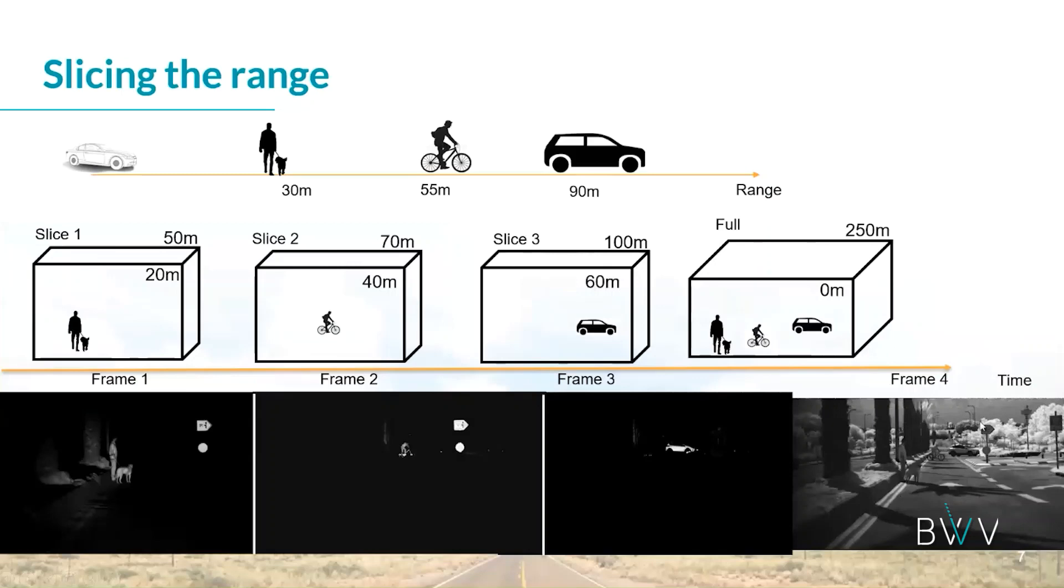So, what I try to explain, actually those triangles are those slices that I'm showing here, that you can create an image that you see only between 20 to 50 meters or between 40 to 70 meters and so forth.